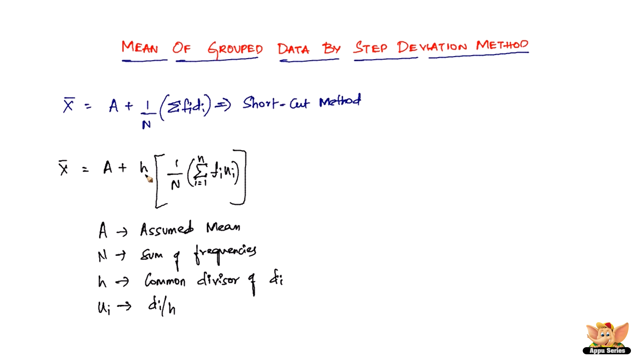What is H? H is a common divisor that is going to divide the deviation, that is di, to make it a little more smaller. Then that is going to be multiplied - whatever you get is going to be multiplied with fi and that will be called fi × ui. So that's all of the difference.